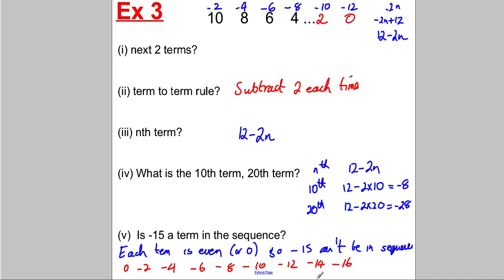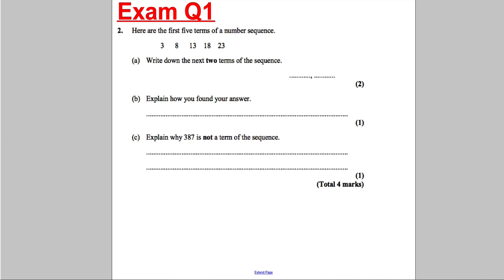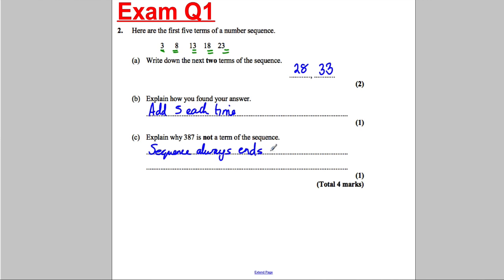Time to do some exam questions. Pause the video for each question, try it, and then I'll go through the answers. Question one: the sequence is going up in 5s, so the next terms are clearly 28 and 33. Explain how you found your answer: add 5 each time. To explain whether 387 is a term: the sequence always ends in 3 or 8, so 387 is not in the sequence.